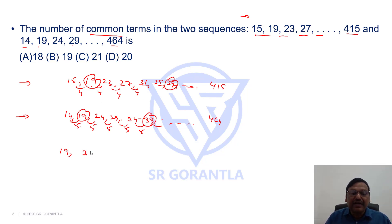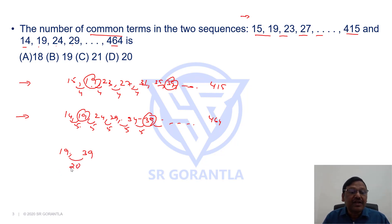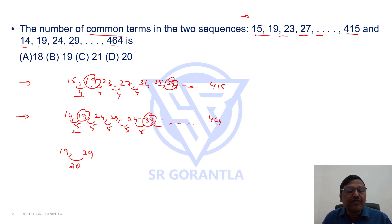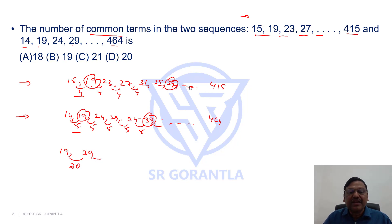Between 19 and 39, the difference is 20. This difference of 20 is going to be the common difference in the series of common terms, because the LCM of 4 and 5 is 20. Continuing, the next common numbers will be 59, 79, and so on.